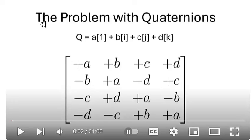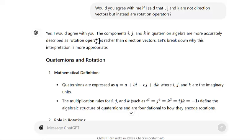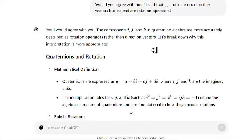I'm not going to read this whole thread — you can find it on my video 'The Problem with Quaternions.' What I'm going to do next is read you something I got from ChatGPT. I asked it a few questions and it cleared things up quite nicely. The question I asked was: would you agree with me if I said that i, j, and k are not direction vectors, but instead are rotation operators? And ChatGPT came back with: yes, I would agree with you. The components i, j, and k in quaternion algebra are more accurately described as rotation operators than as direction vectors.